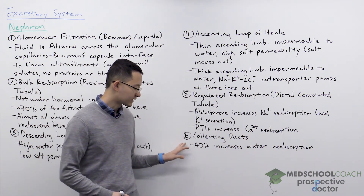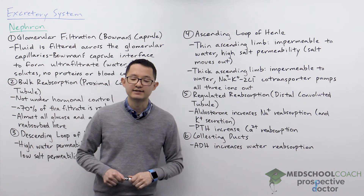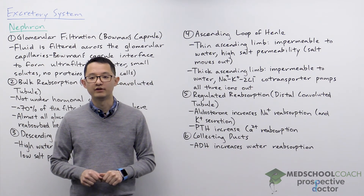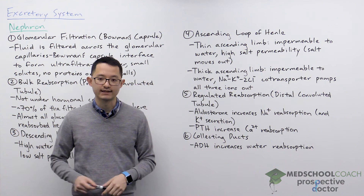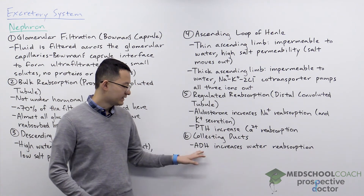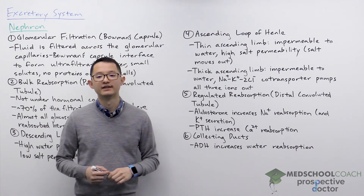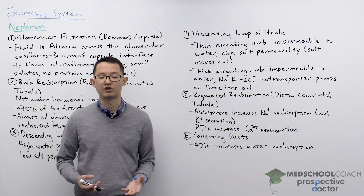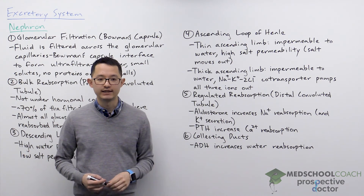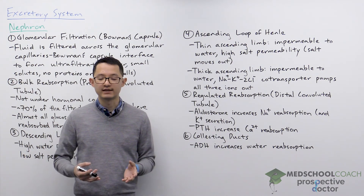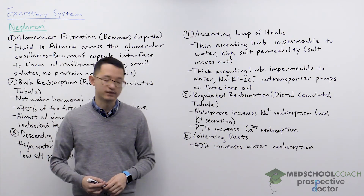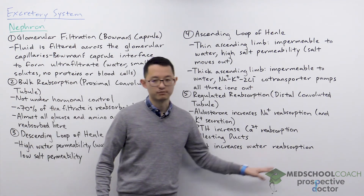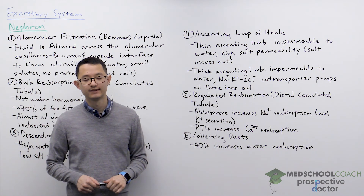Finally, we have the collecting ducts. This is where ADH — antidiuretic hormone, also called vasopressin — acts. ADH increases the production of aquaporins, which are water channels. These proteins allow for water reabsorption, so essentially ADH increases water reabsorption at the collecting ducts.